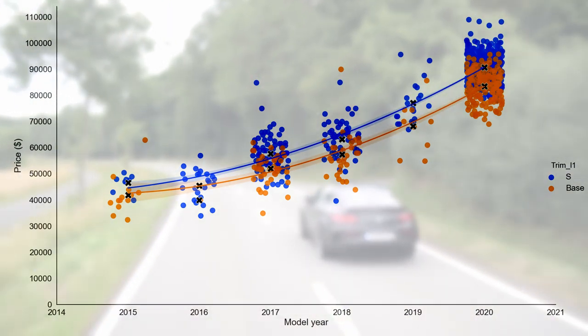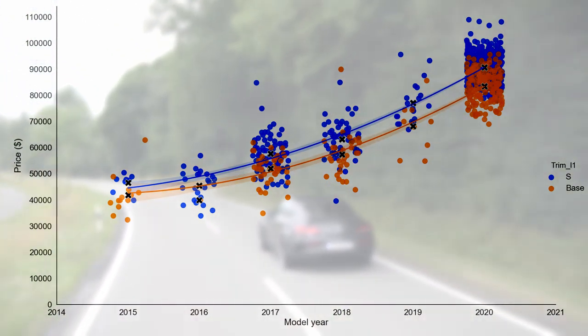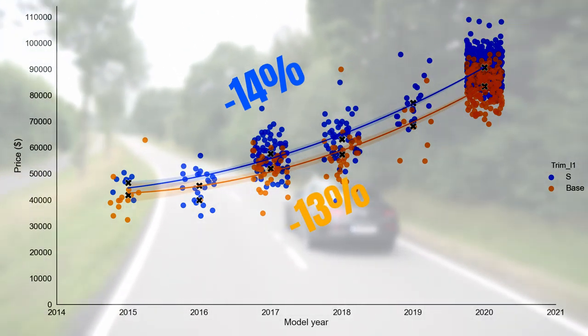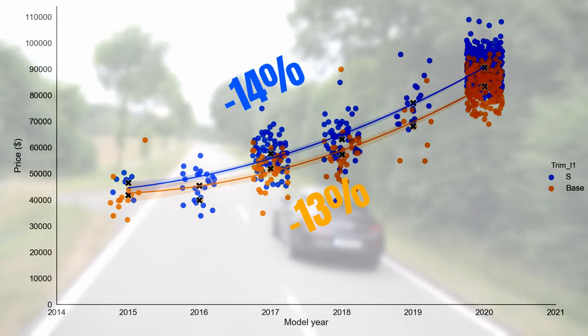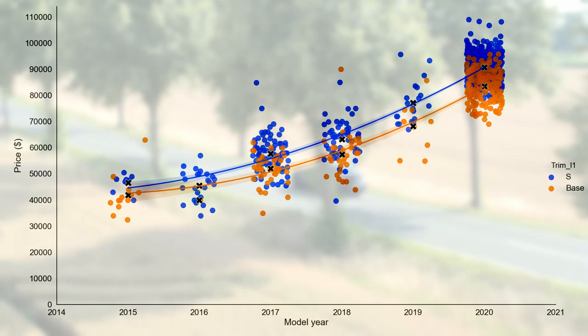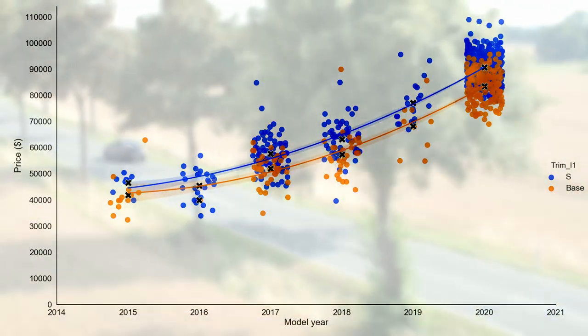Relatively however, the depreciation numbers are almost identical as they equal 13 and 14% of the average new prices. But due to the higher absolute depreciation number of the S, we can see that the premium you pay for an S fades away when the car ages.